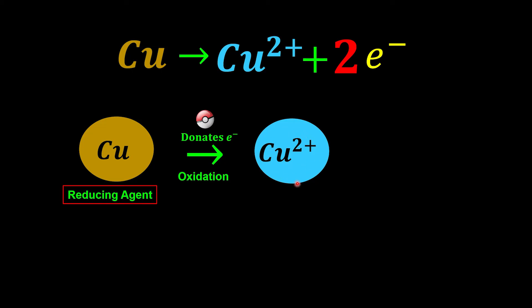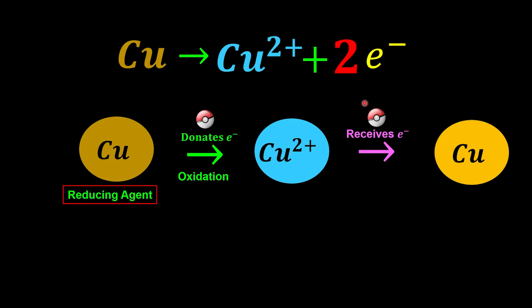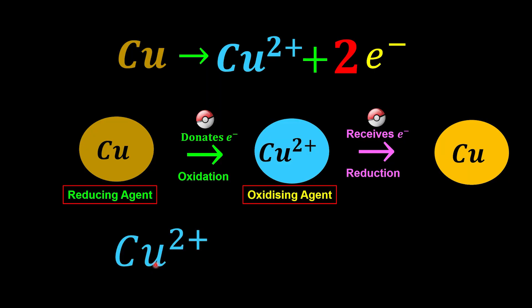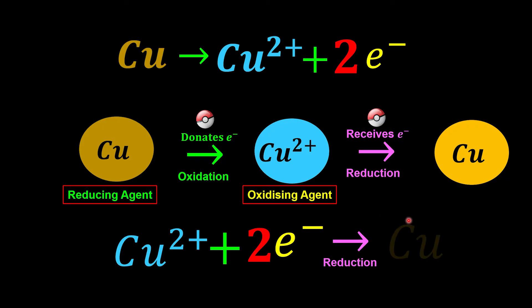But when copper forms the copper(II) ions, the ions have the tendency to receive back the electrons to form copper metal again — this process we call reduction. In this process the copper(II) ions act as an oxidizing agent, because when copper(II) ions receive the electrons, we call it the reduction process, forming back copper metal. So this is why copper(II) ions act as an oxidizing agent. Don't be confused: metals are reducing agents, but the metal ion is the oxidizing agent, and we are done.